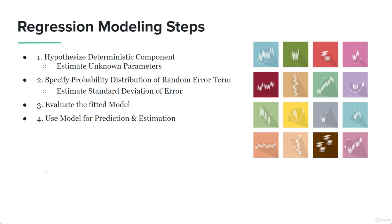The third step would be evaluating the fitted model. The term 'fitted' comes from the fact that we use our equation to represent the relationship between the components, and then we evaluate it. After we have used the equation to represent the variables, we move on to the evaluation step. After evaluating, we're going to use the model for prediction and estimation — that will be the final step.